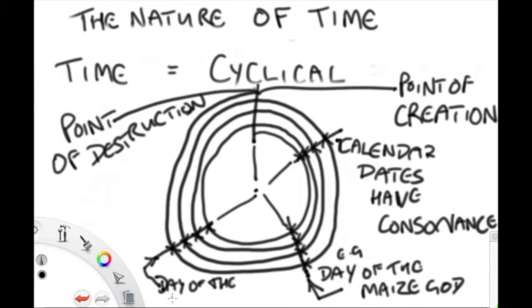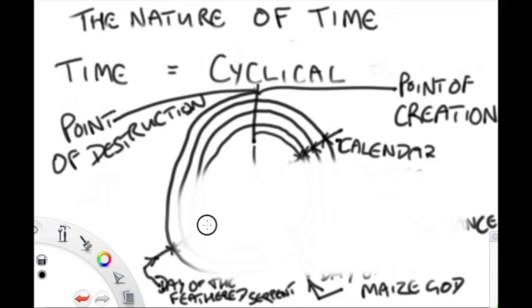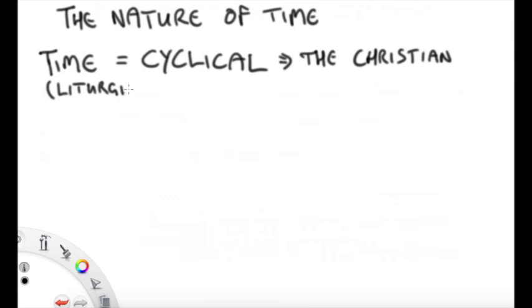Think of it in terms of notes on a piano keyboard. They sound the same, but they're not quite the same. Cyclical time is very similar in that regard. It seems the same, but it's also slightly different.